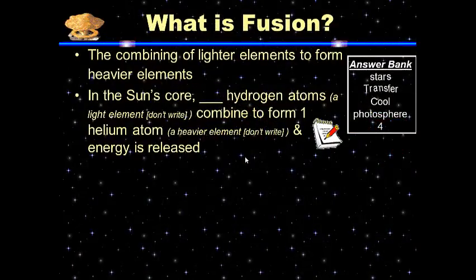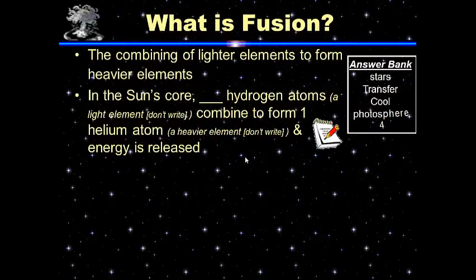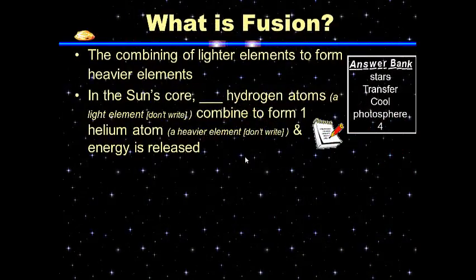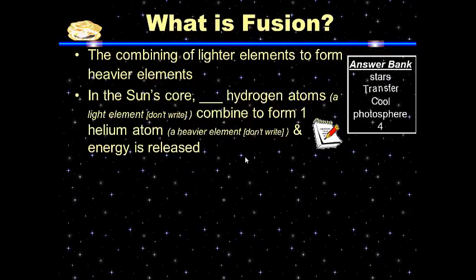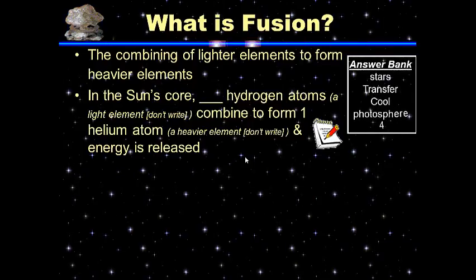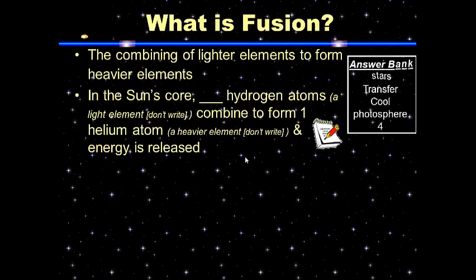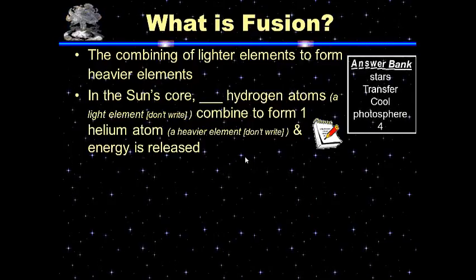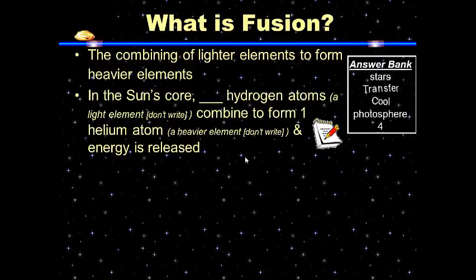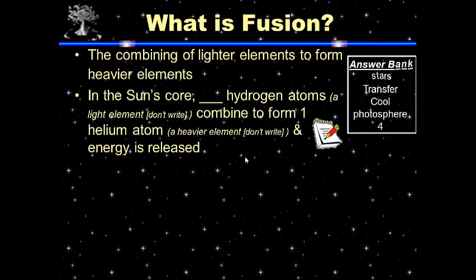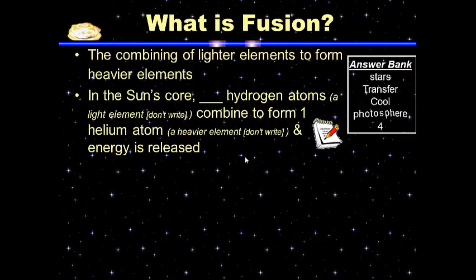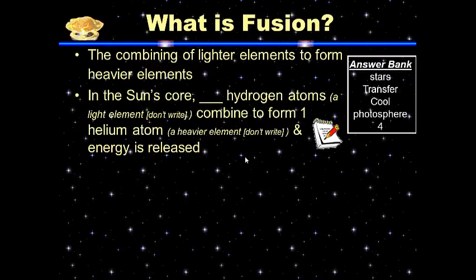Write down the question 'What is fusion?' in your question section. Everything under the question goes in your answer section. Read the passage and use the answer bank to determine which word best completes each sentence. Record that word in your answer bank. Please pause this now while you write.